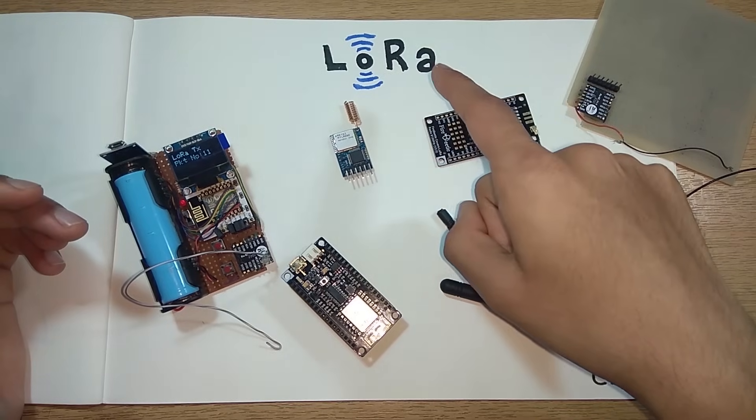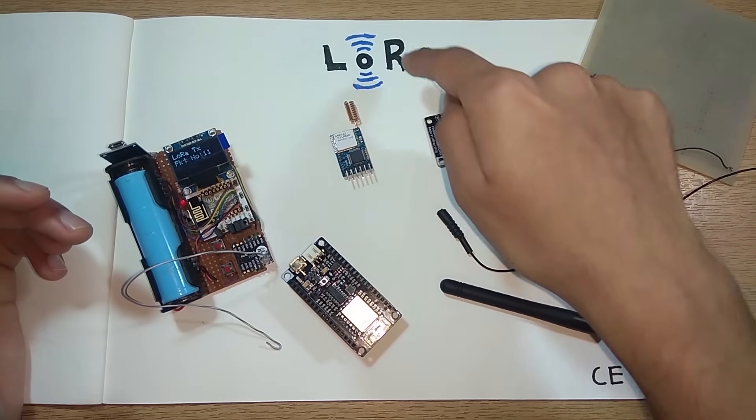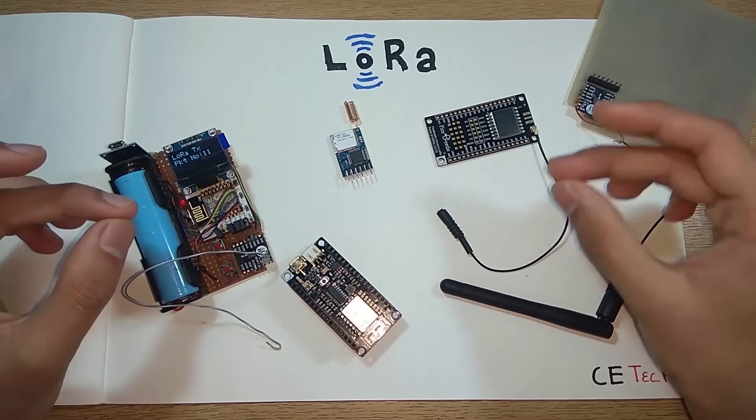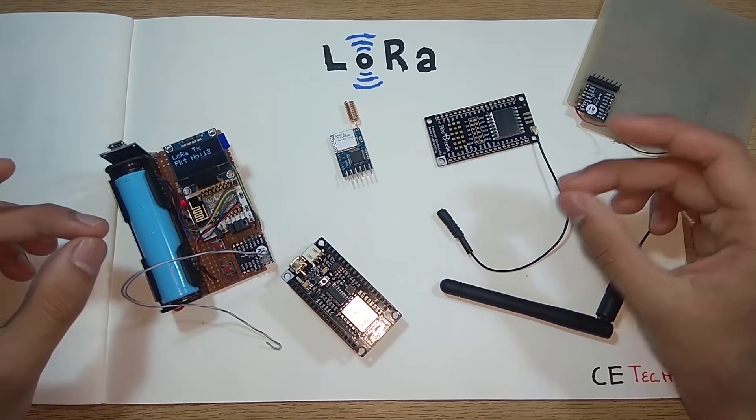To give an example, using LoRa you can transfer data from one point to another point and these points can be tens or hundreds of kilometers apart.